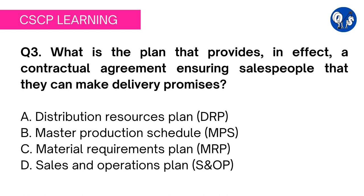DRP is defined as planning of key resources contained in a distribution system, like warehouse space, money, truck freight cars, etc. There is no association between distribution resources plan and delivery promises made by salespeople, so this is not the correct answer. Let's see what we have in option B: master production schedule.